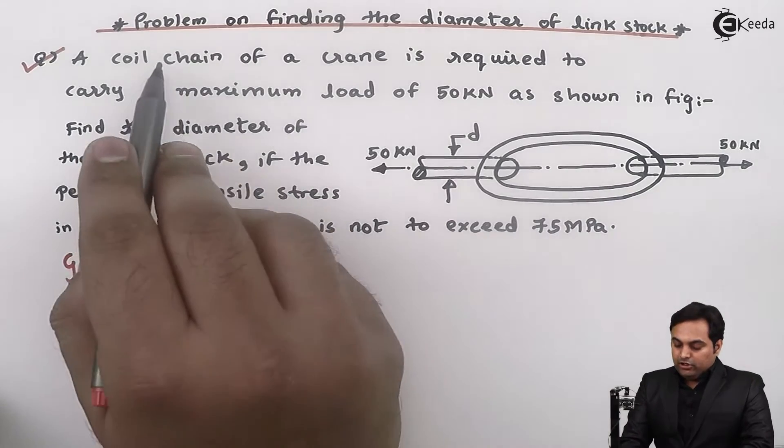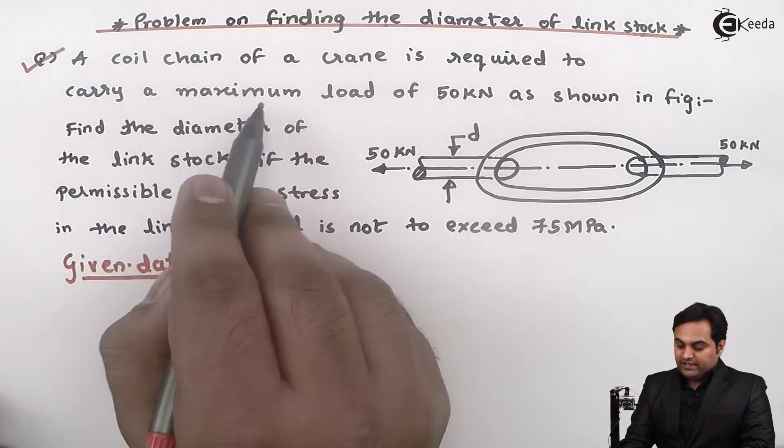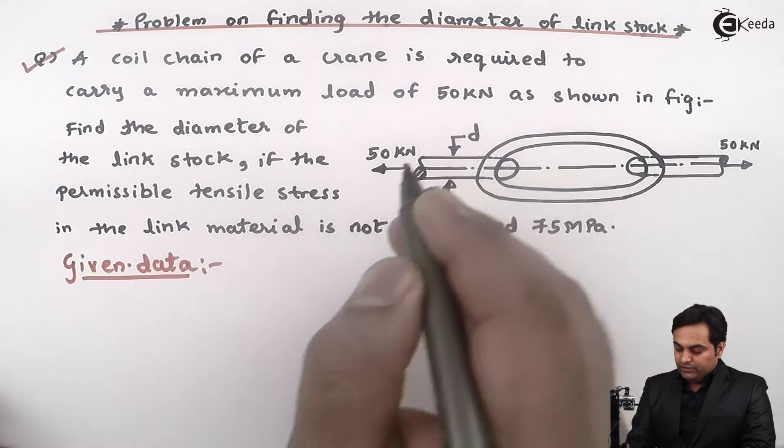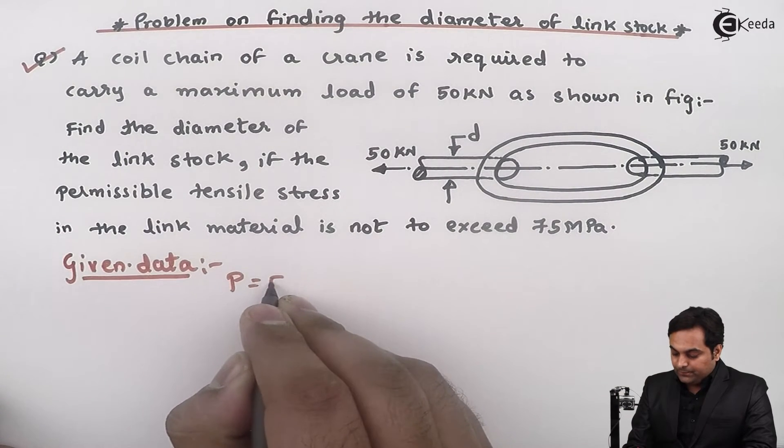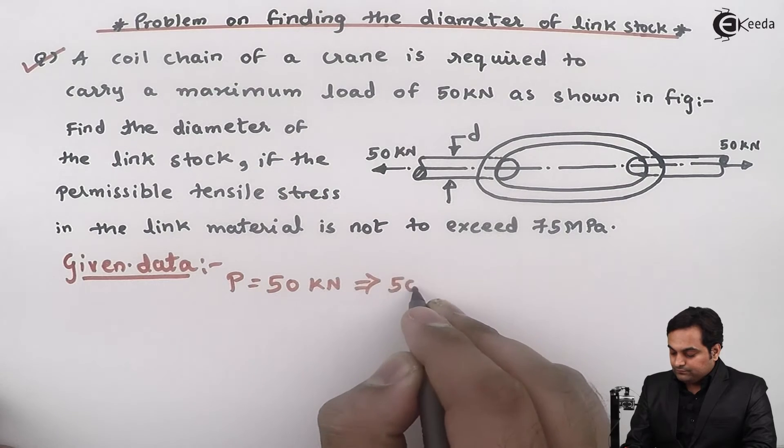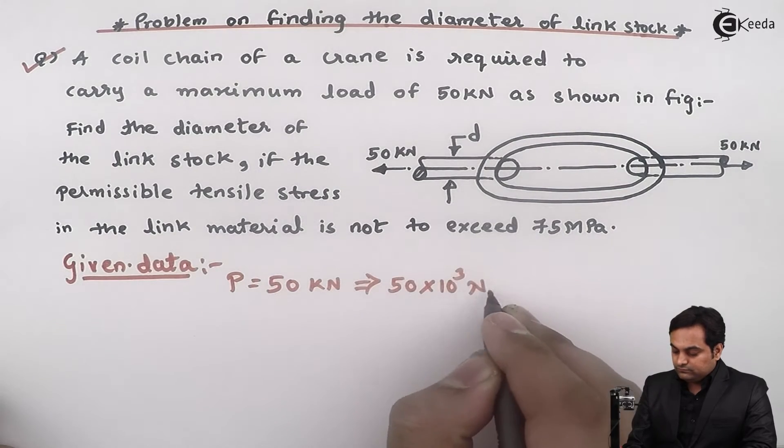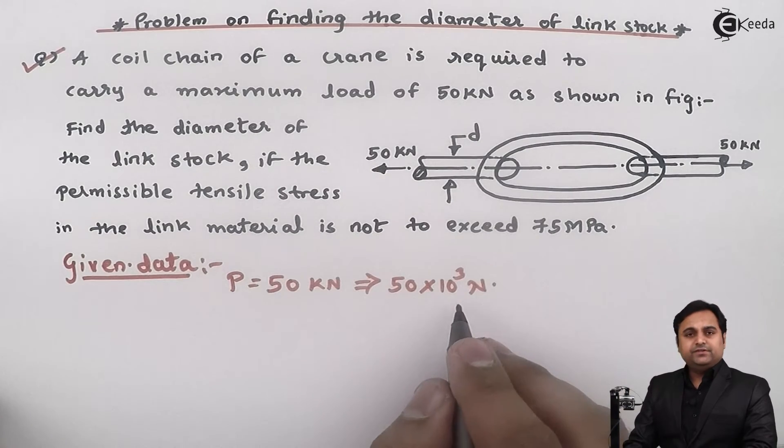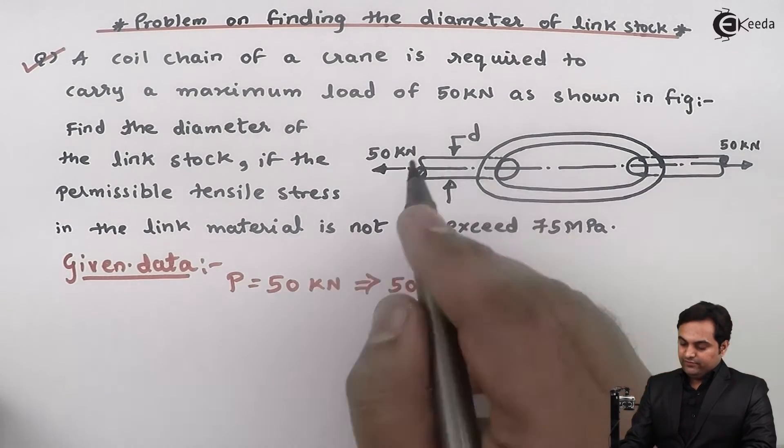A coil chain of a crane is required to carry maximum load of 50 kN. The load is given, so P = 50 kN = 50×10³ N as shown in the figure.